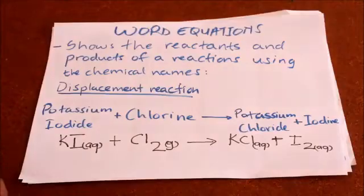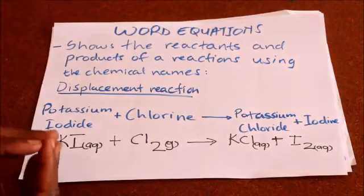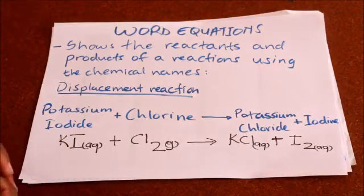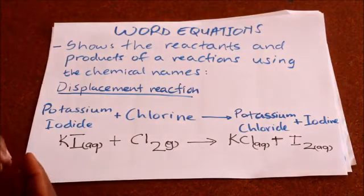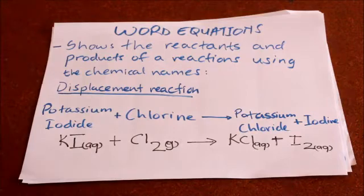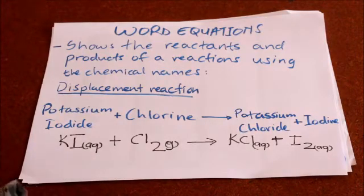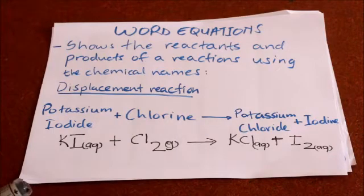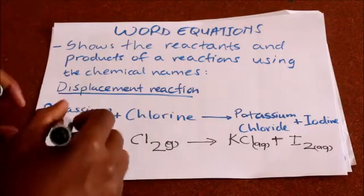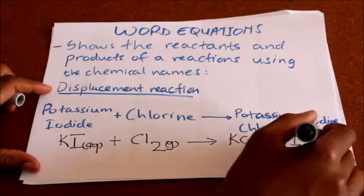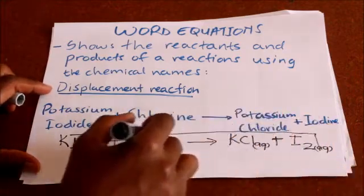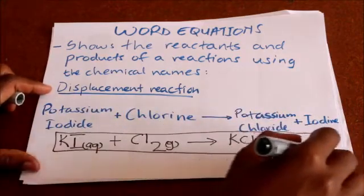What is really a word equation? The word equation gives a description of what is happening during a chemical reaction using the chemical names of substances taking part in the reaction. So we are mostly looking at the chemical names of what is really happening.